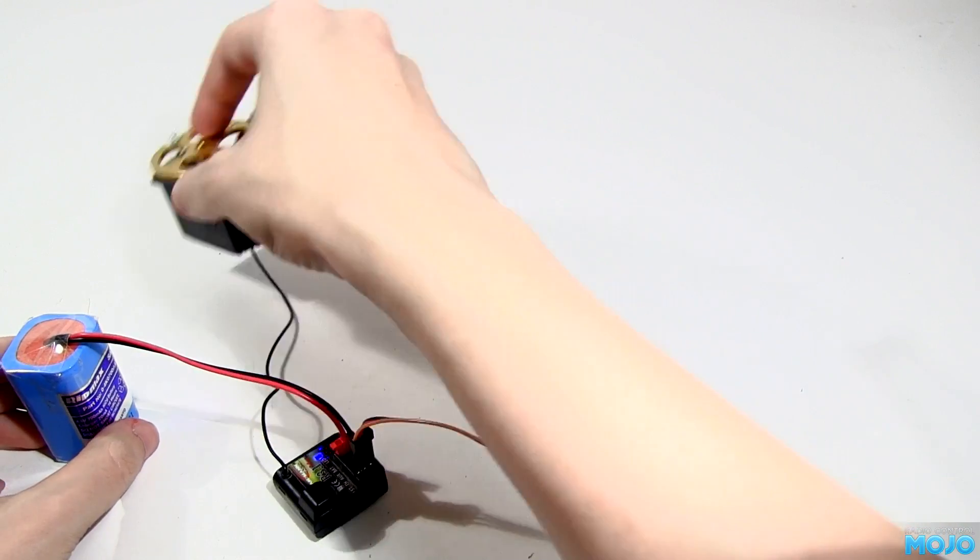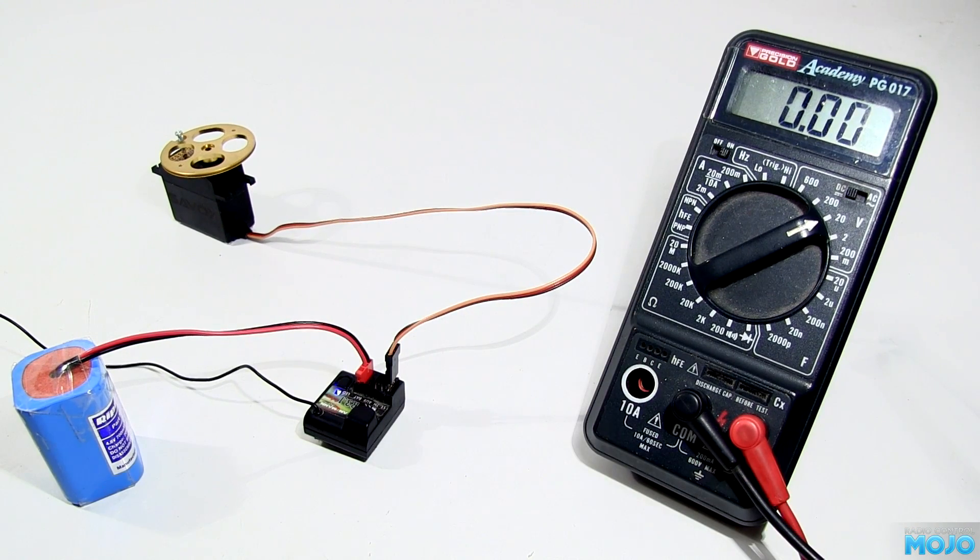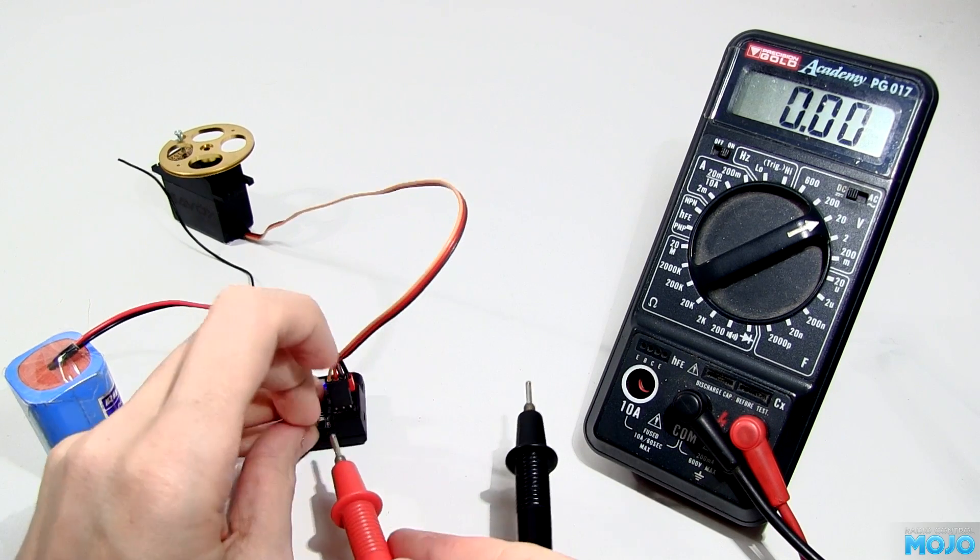The three connections to the servo carry ground, power, and signal to the servo. Ground is common, or negative if you like. Power is the battery voltage, 5V here.